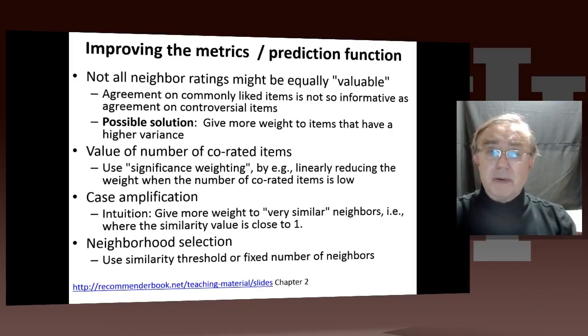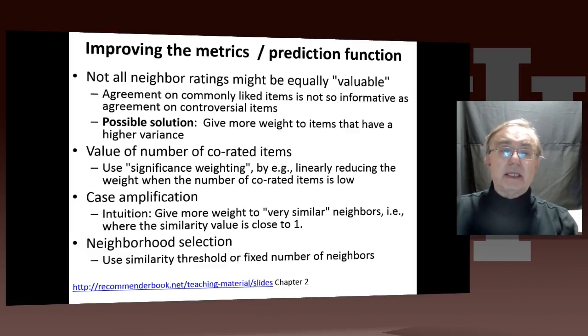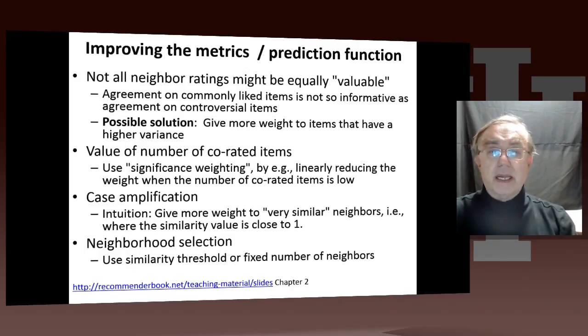Remember this is not a theory, so there's no exact answer. We have AB testing to test any idea. We can use all sorts of heuristics and intuitive ways of modifying that. Controversial items might require more weight because agreeing on those is more interesting than agreeing on commonly liked items. This is the long-tail idea. When the number of items rated in common by different users is small, you may wish to not consider that so seriously.